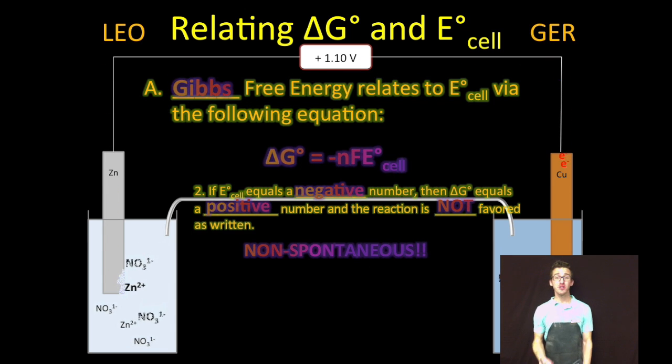Remember, if you've set your voltaic cell up correctly, you should always get a positive cell potential and a negative Delta G, because a correctly constructed voltaic cell is a spontaneous redox reaction.